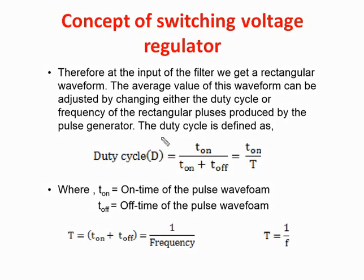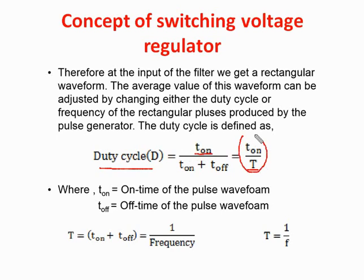The duty cycle D is defined as T-on divided by T, where T equals T-on plus T-off. T-on is the time for which the switching element is kept on, divided by the total time T, giving duty cycle D — the ratio of on-time to total time. By increasing T-on, we increase the duty cycle. The maximum duty cycle is one (when T-on equals T) and the minimum is zero (when T-on equals zero). So duty cycle varies from zero to one.